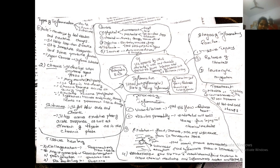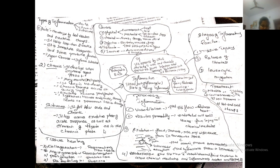Subacute inflammation falls between acute and chronic. It has an active exudate phase like the acute response, as well as an element of repair seen in the chronic phase. The stages of inflammation overall are: tissue injury, release of chemicals, and leukocytic migration.